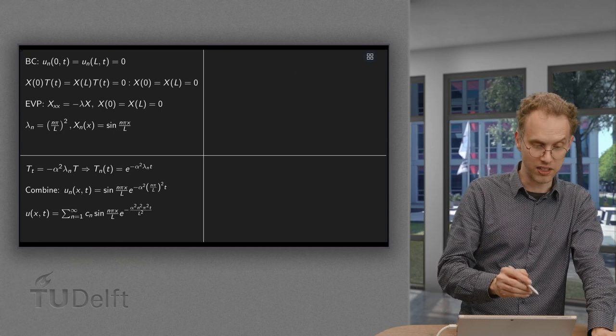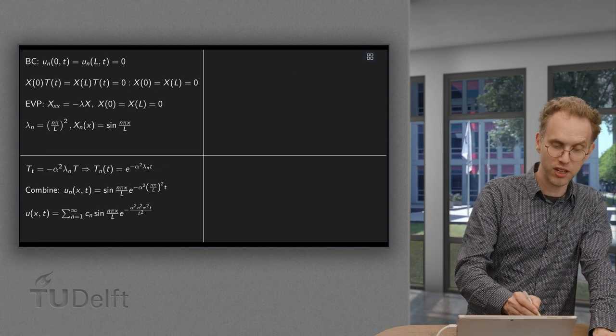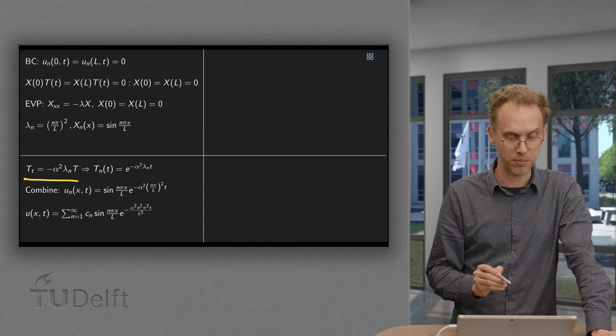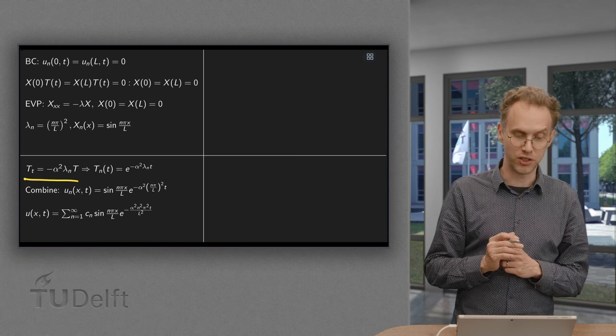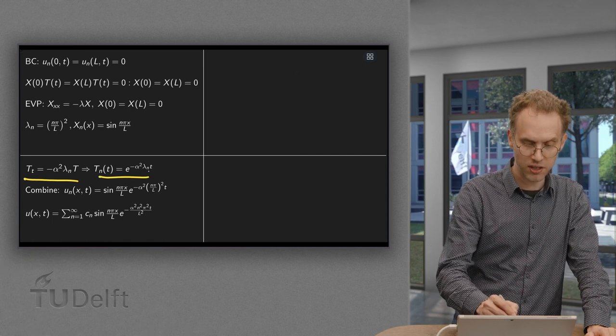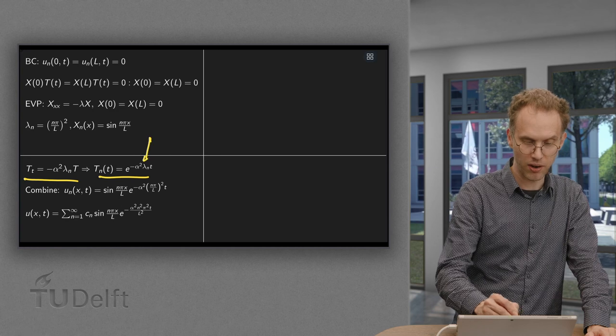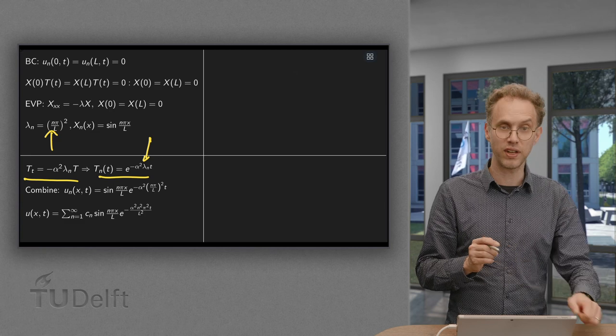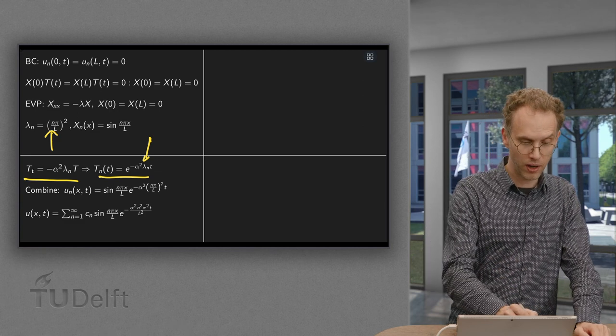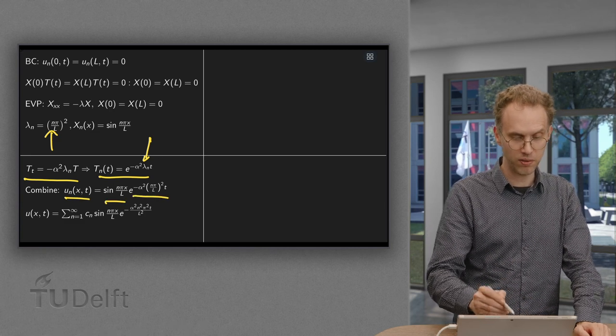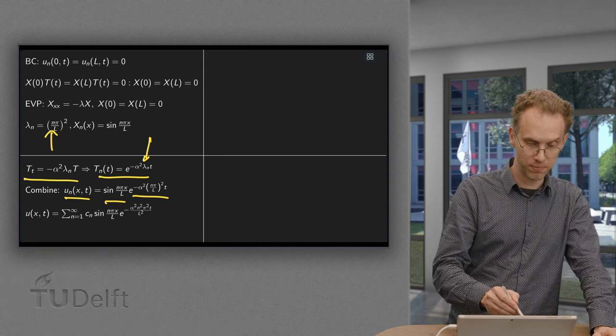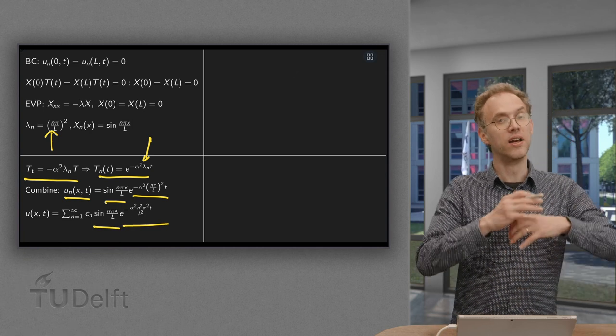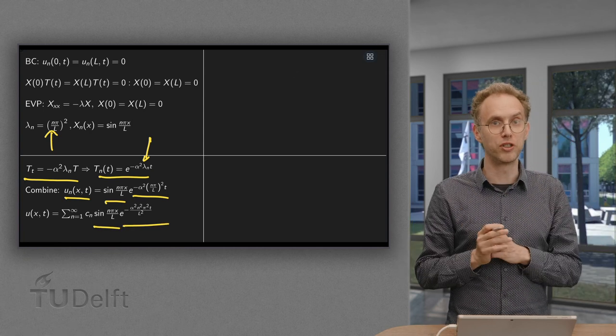Now once we have our lambdas, we can find T as function of T. Because TT equals minus alpha squared lambda times T, which gives us exponential functions like this, where the lambda n's are already given over here. So now we have both X of X and T of T. So we can find our u n's. U n equals X of X times T of T, which is over here. And our total solution is some linear combination of the u n's over here. So now we have done the entire first part.